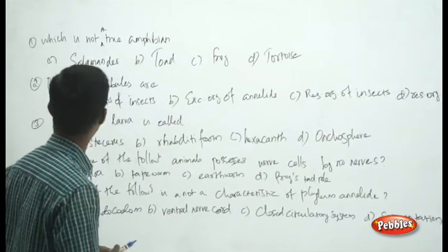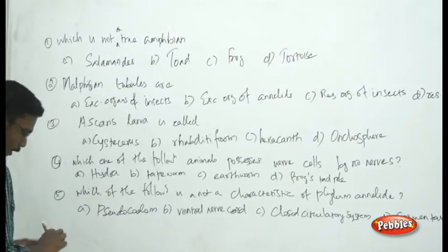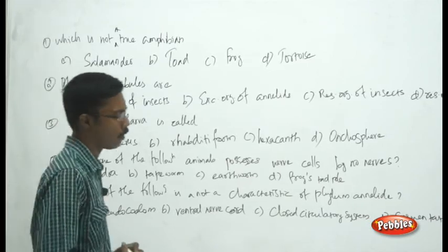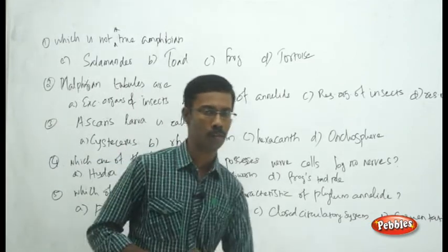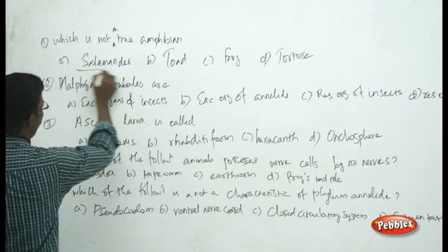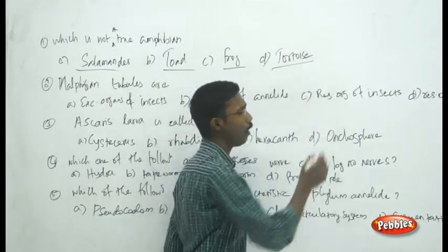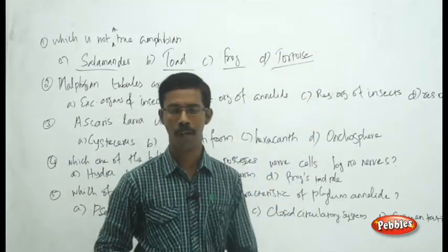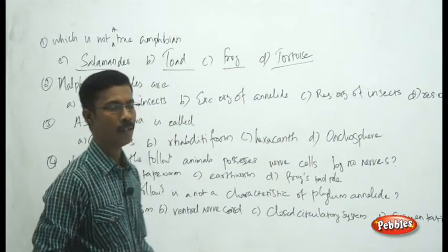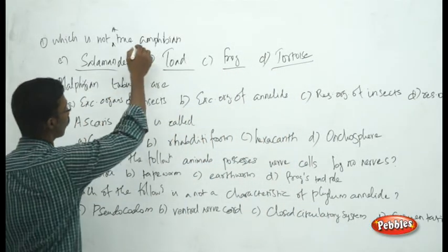See the first question: which is not a true amphibian? The choices are salamander, toad, frog, and tortoise. All four can live in both water and a terrestrial environment, and that is what is called an amphibian. Amphibian means they can live in both water and on land.